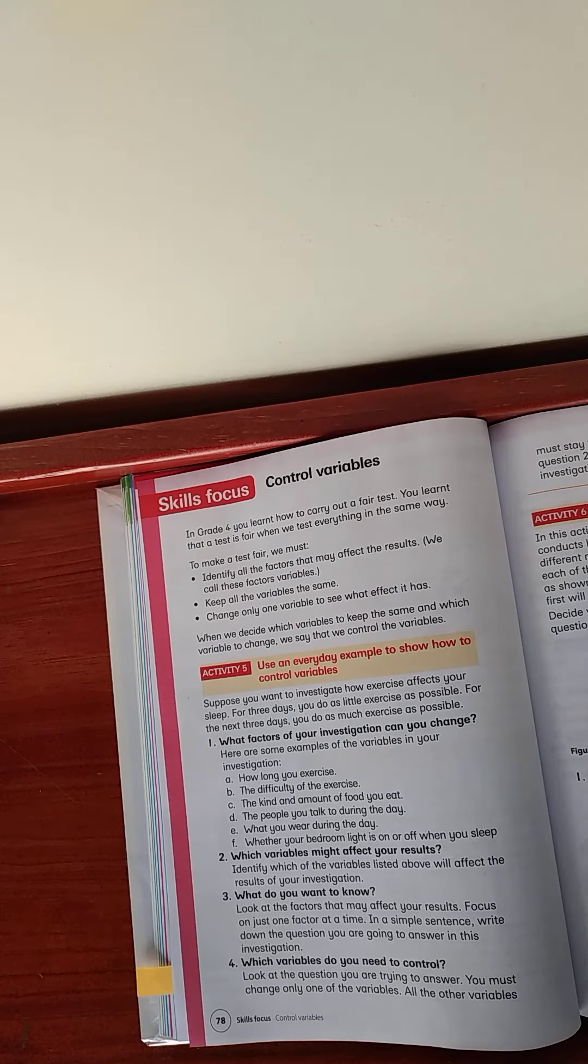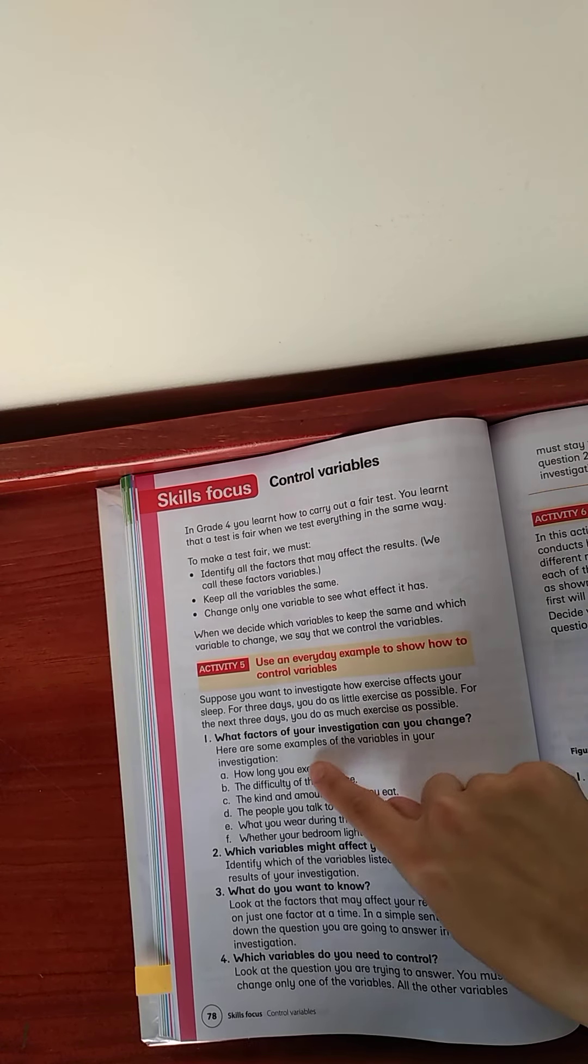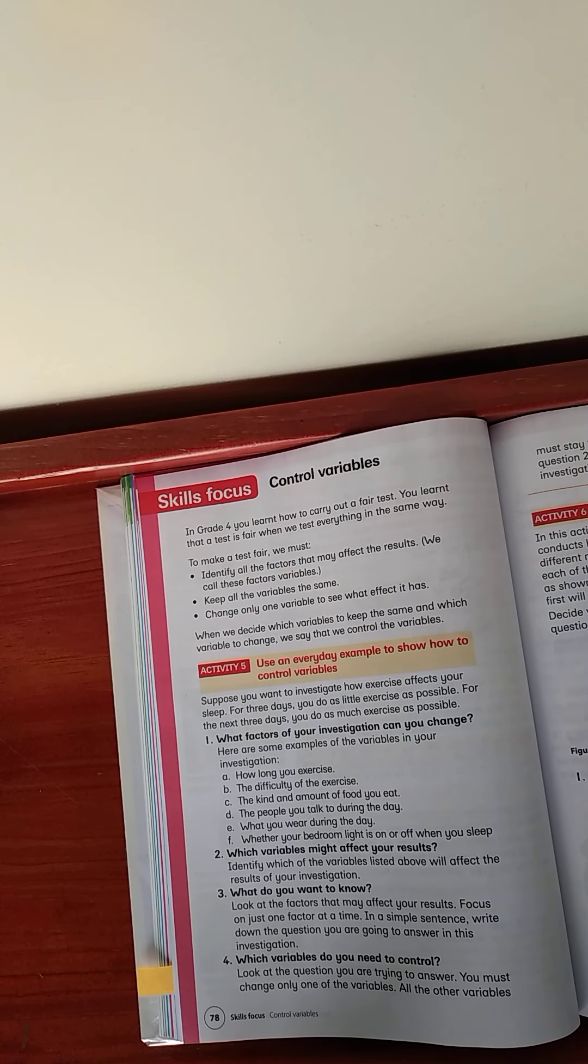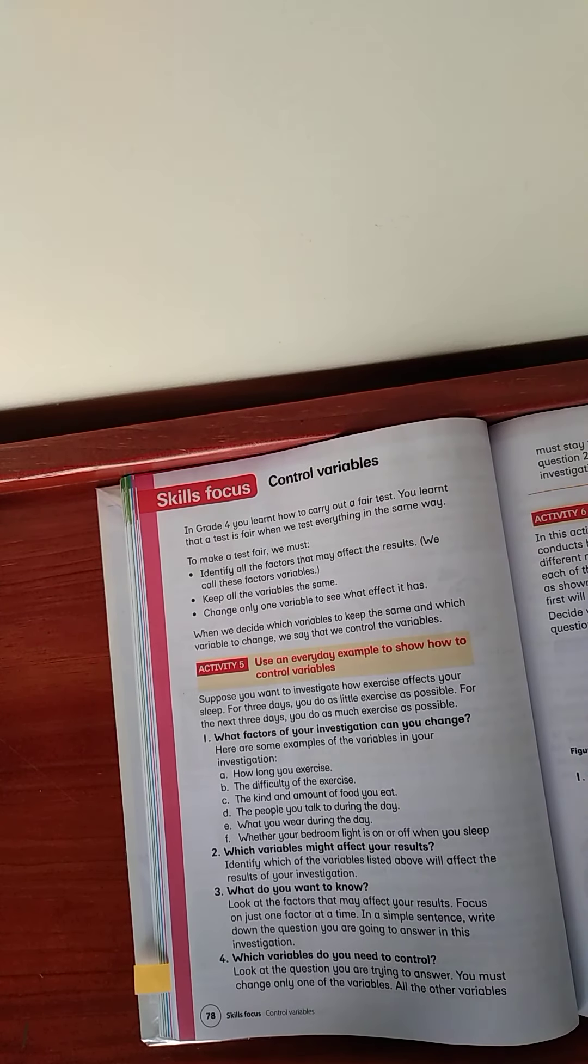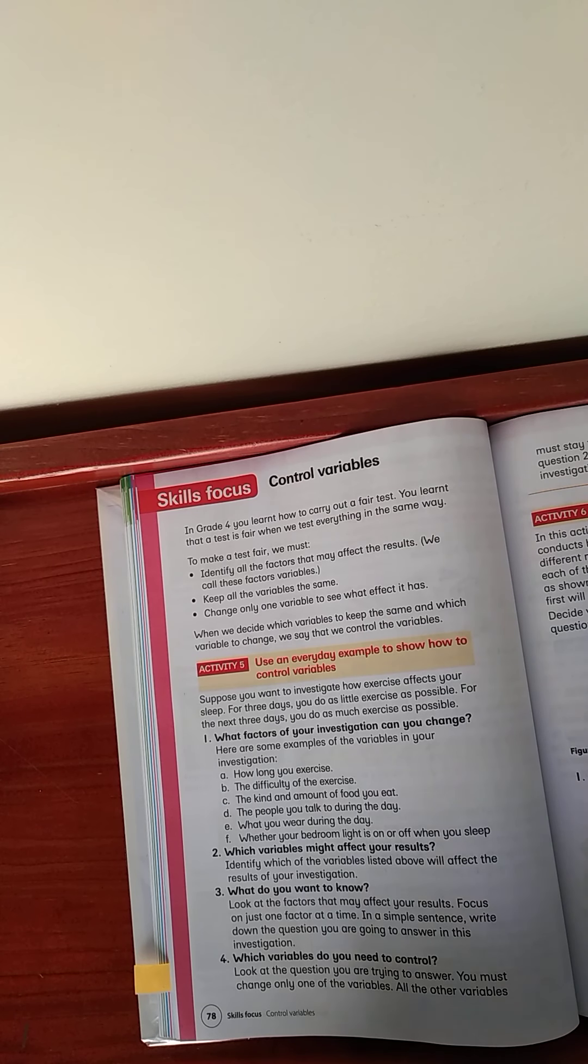Then, two, which variable might affect your results? Identify in this which one will, which of these, not just one, will affect the results. And what do you know? Look at the factors that may affect your results. Focus on just one factor at a time. In a simple sentence, write down the question you are going to answer in the investigation. So, I want you to have a look. How are you going to solve this problem? So, you have the problem of the amount of food that you're going to eat. How are you going to solve this problem? Are you going to keep track of the amount of food that you're going to eat? What are you going to eat? Healthy or unhealthy? And then, number four.